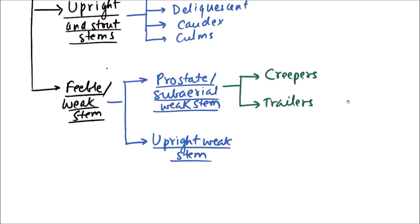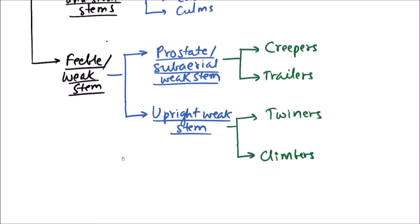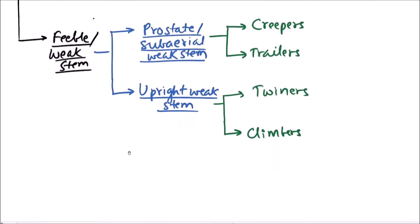While in upright weak stem again there are two categories: first one is twiners and the second one is climbers. Climbers can be further classified into four categories.